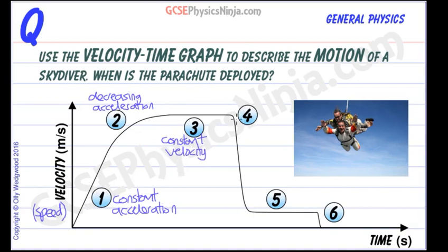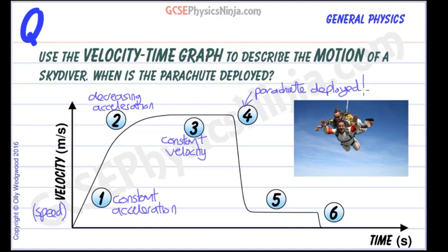At four something dramatic has happened because the skydiver's velocity has plummeted downwards — it has suddenly decreased in speed by an awful lot. What's happened here is that the parachute has opened. So the parachute is deployed, and we have a sudden and large deceleration at four.